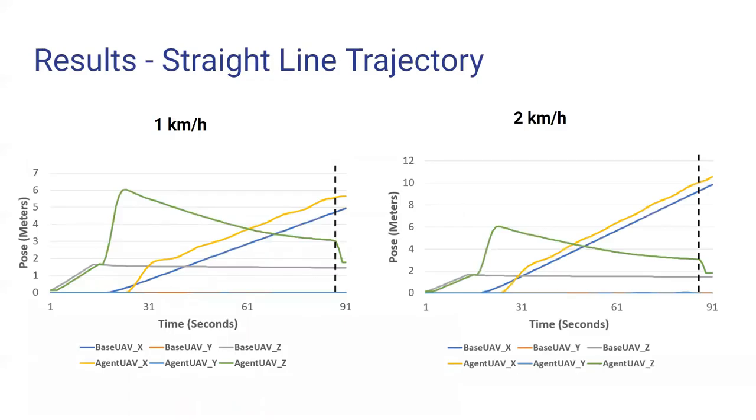And the results, the overall results could be seen here. We have for each trajectory, that is the straight line, square and ellipse, we have used four different velocities. Those are 1 km per hour, 2 km per hour, 3 km per hour, and 5 km per hour.